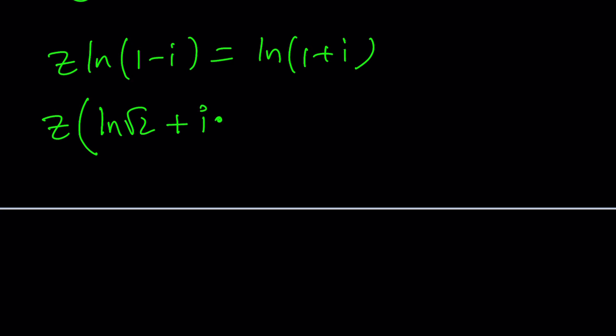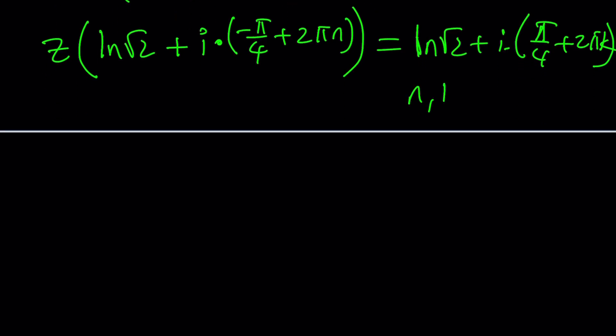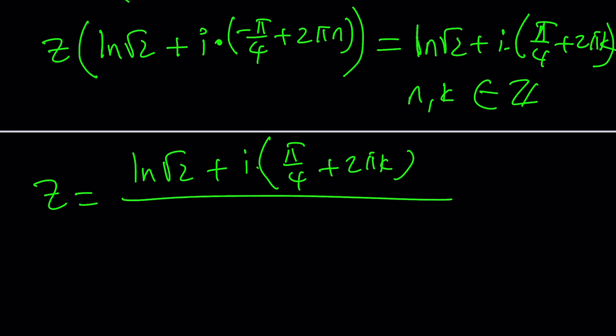So this is going to be ln root 2 plus i times the argument. And in this case, the argument is negative pi over 4, but I like to add 2 pi n to it. So I'm going to write it this way. And then on the other side, we have ln root 2 plus i times pi over 4. But again, I'm going to add 2 pi k to it so that I can cover all the angles. Infinitely many values, n and k are integers, by the way.